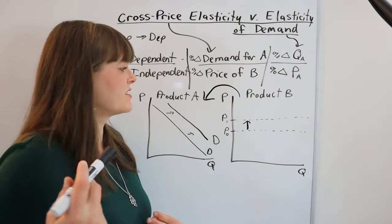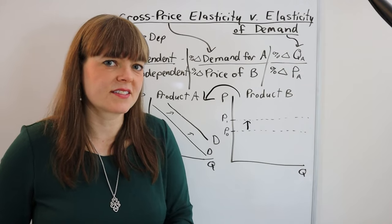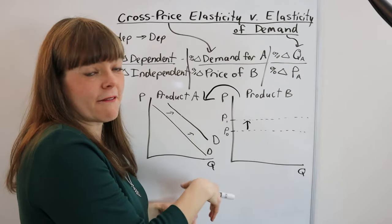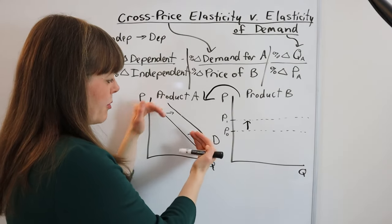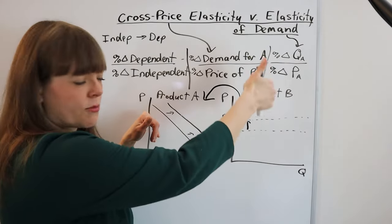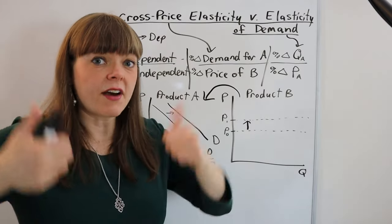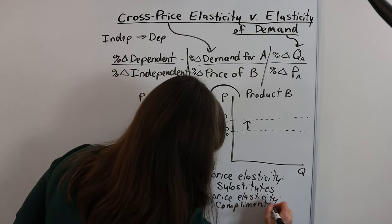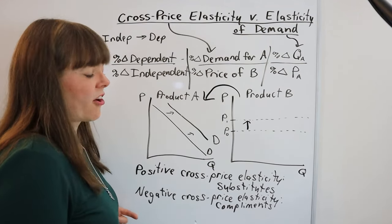Cross-price elasticity is used to determine how close substitutes two products are, or whether they are complements. A classic example of complements is peanut butter and jelly. If the price of peanut butter goes up by 50% due to, say, a peanut disease, people might consume less jelly because they don't have peanut butter to pair it with. So increasing the price of peanut butter leads to a decrease in demand for jelly — that means they're complements. A positive cross-price elasticity means the goods are substitutes; a negative cross-price elasticity means they are complements.